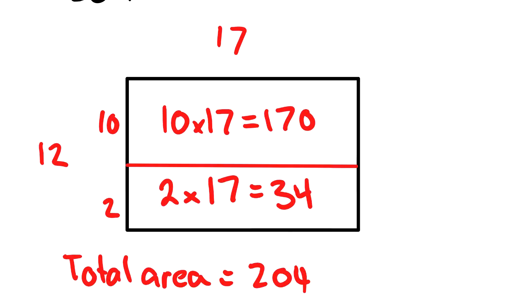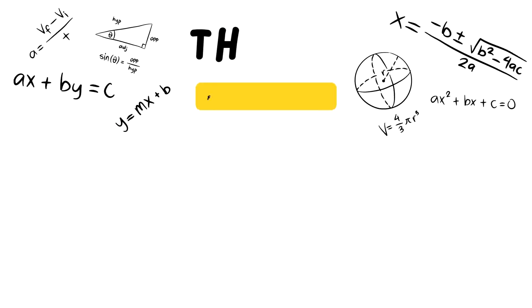And again, you could break it up in multiple different ways. If you wanted to break the 17 up, you could have vertical lines going down to make it easier.